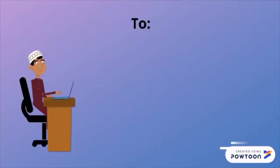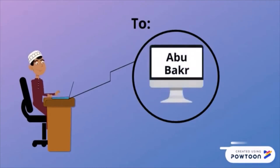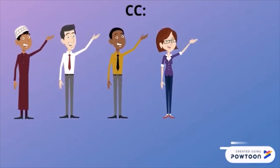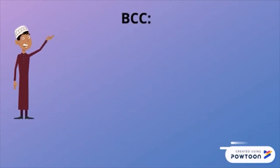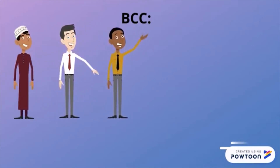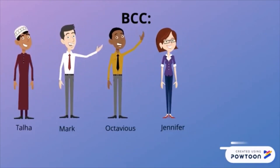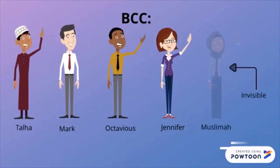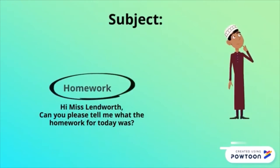To: this is the feature in which you type in who you want to send the email to. CC stands for carbon copy — this allows you to send the email to another person or people. BCC stands for blind carbon copy — this allows you to send to another person or people as well, but the difference is that this feature hides the added name from the people who were CC'd.